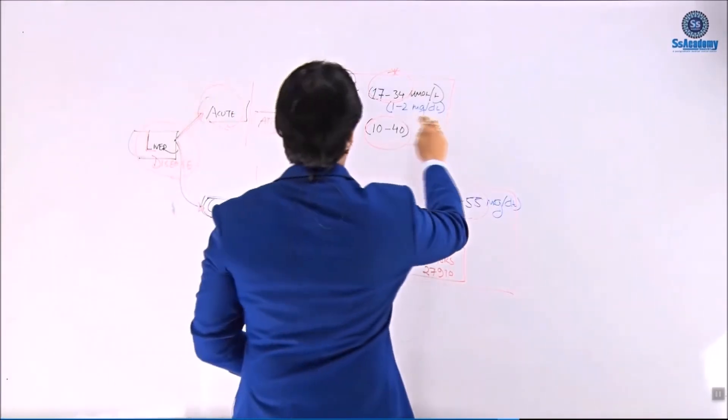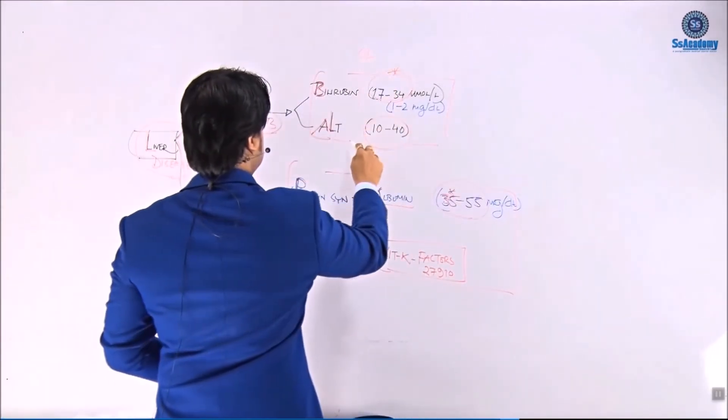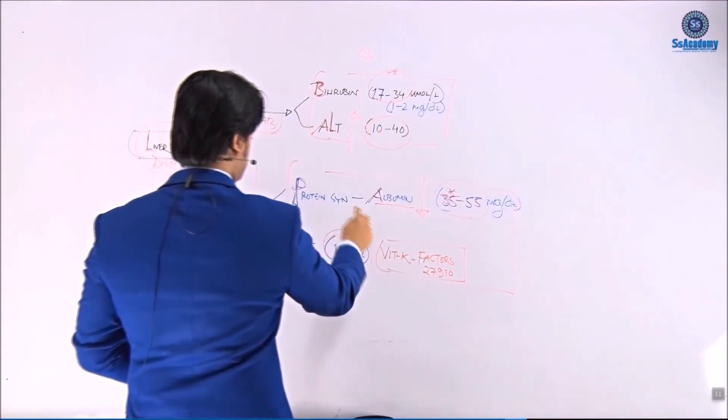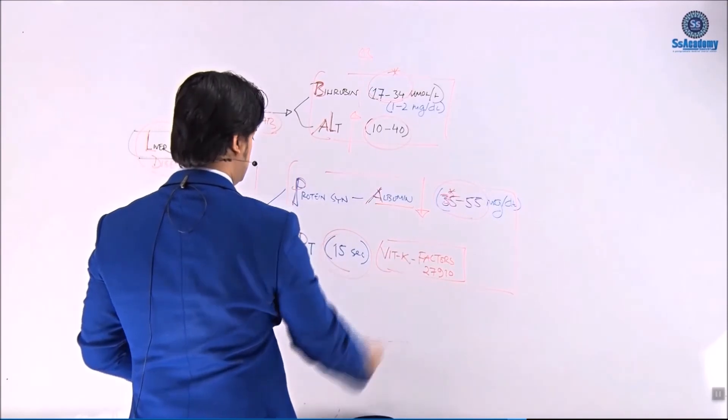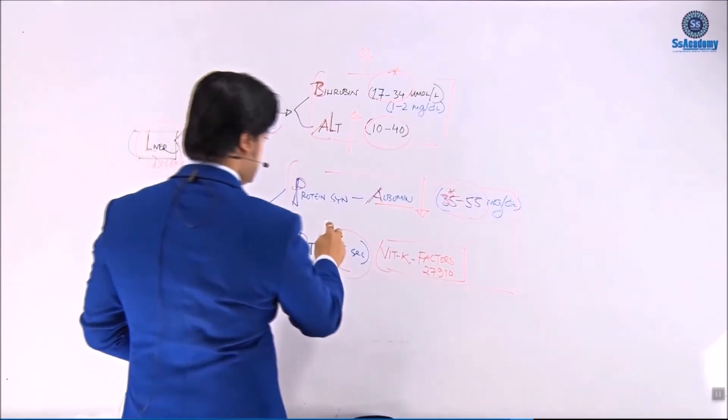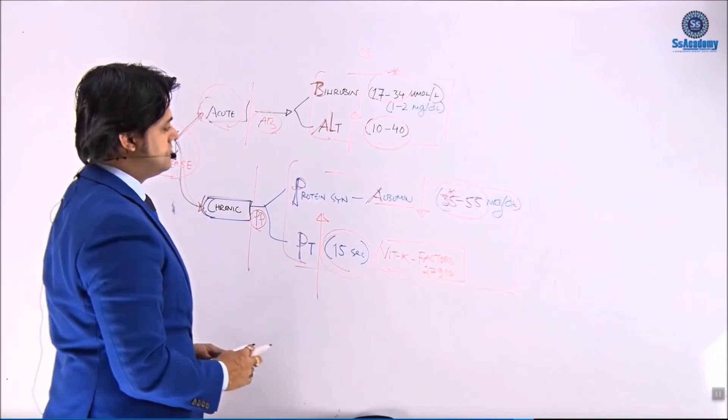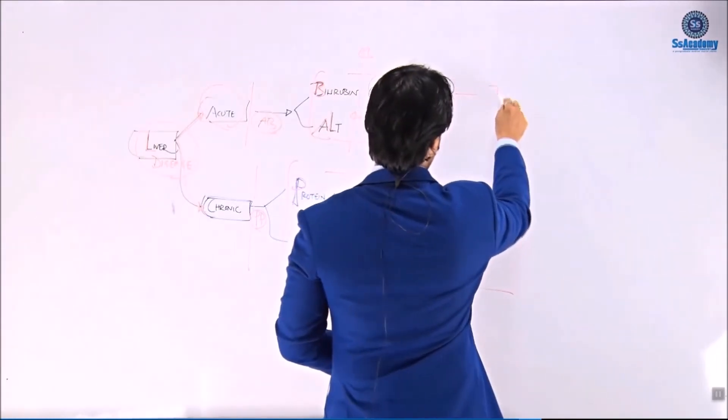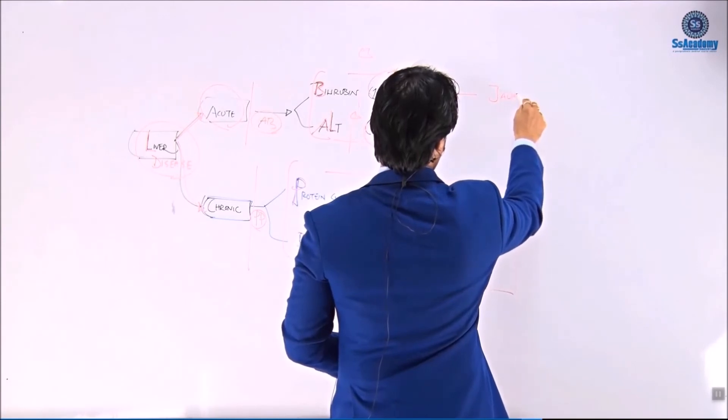And this leads to the bilirubin to be increased, ALT to be increased, albumin should be low because the protein synthesis decreased. So albumin will be low and prothrombin time will be increased. So once again bilirubin increased means clinically we are getting jaundice.